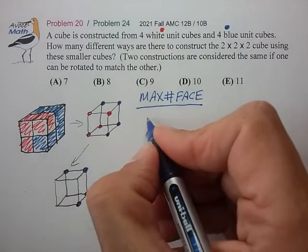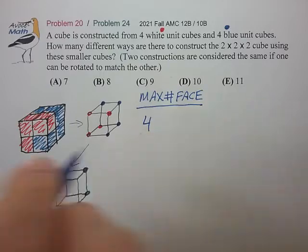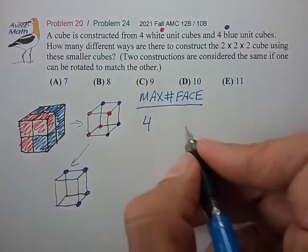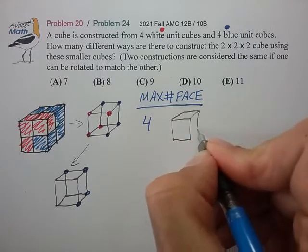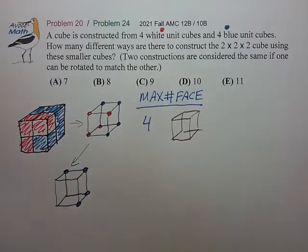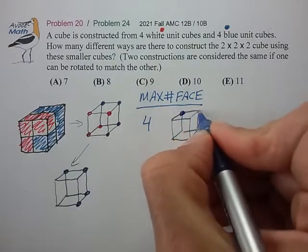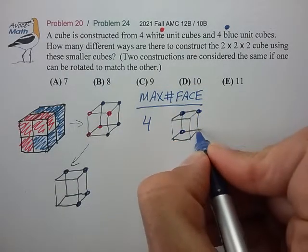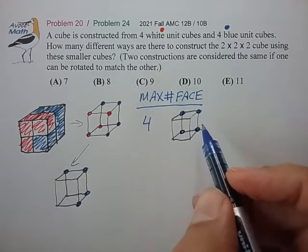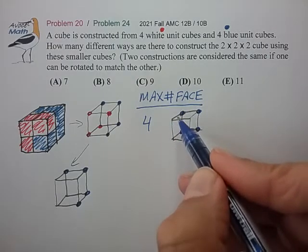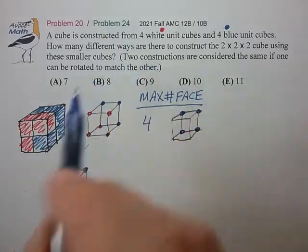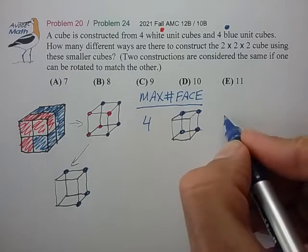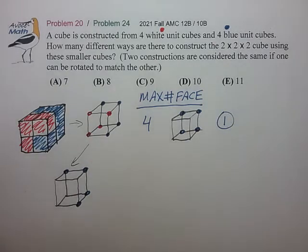So for example, for a max face number of four, what that means is that I'm going to have my unit cube and I'm just going to place four dots on a single face of that cube. And any other which way that I could put four dots on a given face would be equivalent in terms of this rotation condition. So this really just counts as one different way or one way to arrange the blue dots.